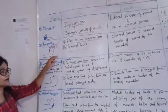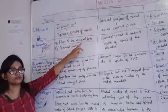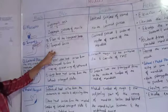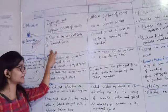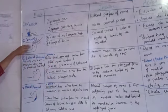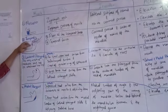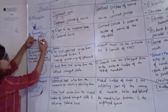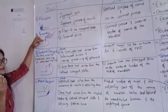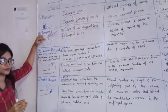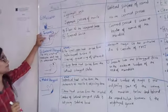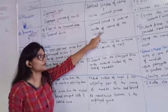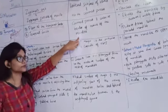Its origin is from the temporal fossa of the temporal bone and the temporal fascia. It then attaches onto the coronoid process of the mandible — specifically the coronoid process, both its anterior surface and its inner surface. So Temporalis muscle inserts into the coronoid process and the anterior border of the ramus of the mandible.